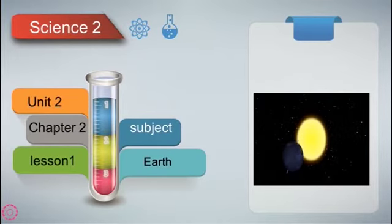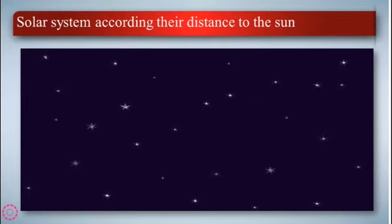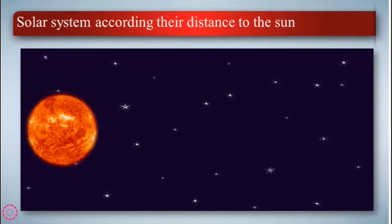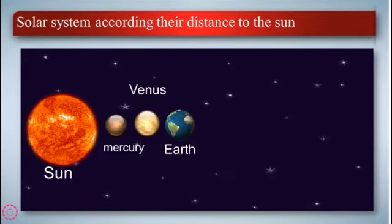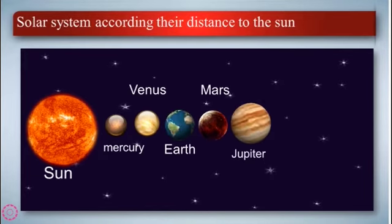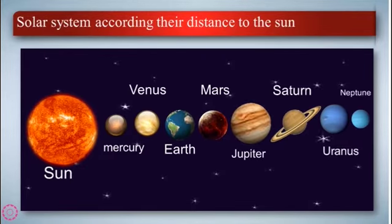Hello dears, how are you? Today we have Unit 2, Chapter 2, Lesson 1. Our subject is Earth. We are talking about the Earth solar system according to their distance to the Sun. This is the Sun, Mercury, this is the first planet, and Venus, and this is our planet Earth, Mars, Jupiter, Saturn, Uranus, and Neptune.